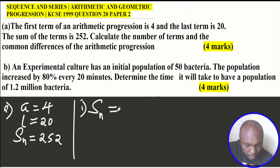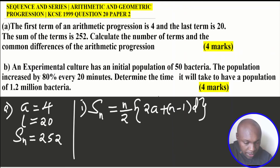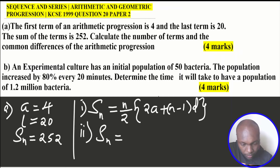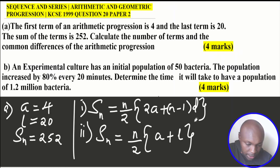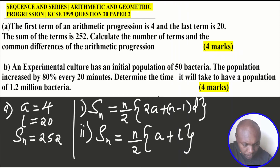The first formula is SN = n/2 × (2a + (n−1)d), used when you know the number of terms, first term, and common difference. The second formula is used when you're given the first term and the last term along with the number of terms. In this question, the sum is 252 and we need to find the number of terms.